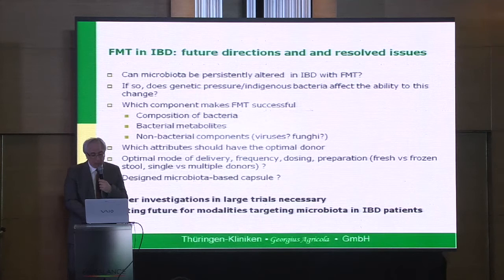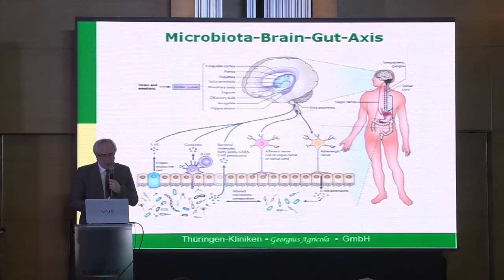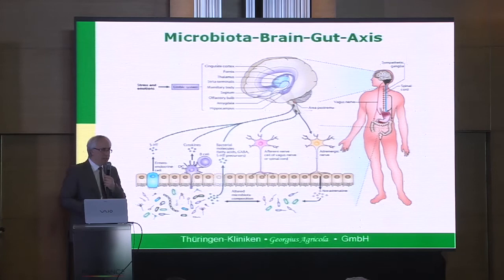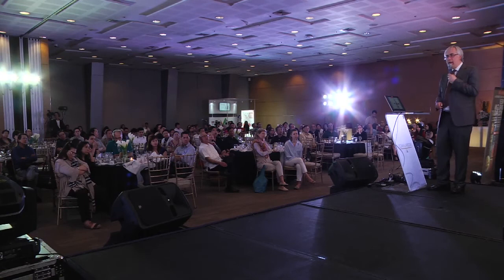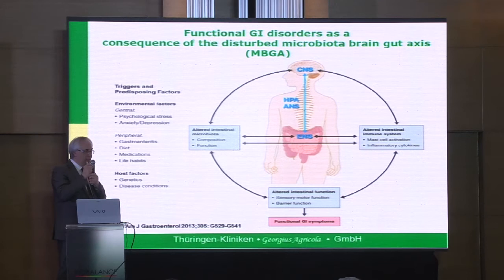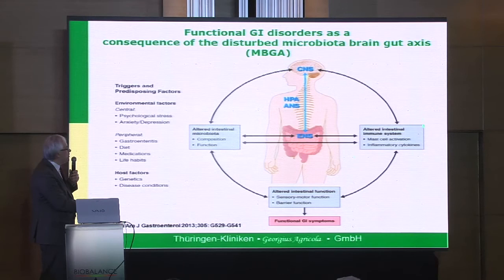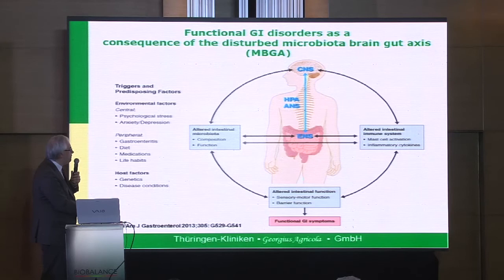IBS — irritable bowel syndrome — we heard about gut feelings and the microbiota brain-gut axis. For sure, microbiota has enormous impact on signals coming from gut to brain. IBS is the most common disease leading to consultation by gastroenterologists — it is the consequence of a disturbed microbiota brain-gut axis. The axis is not working, we have changes in the intestinal immune system, alteration in intestinal sensory-motor function, barrier function, and alteration in gut microbiota.